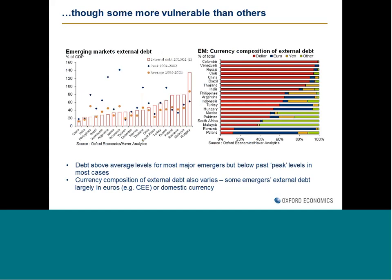Some emerging countries are nevertheless much more vulnerable than others. In general, looking at external debt-to-GDP ratios, the average levels for most emerging markets are below past peak levels. But that is not true in all cases — there are countries such as Hungary, Malaysia, Romania, South Africa, Taiwan, and Turkey where external debt-to-GDP ratios are hitting new highs. A promising element, however, is that for a lot of Asian countries, external debt-to-GDP ratios are well below the peak levels we saw in the Asian crisis at the end of the 1990s.